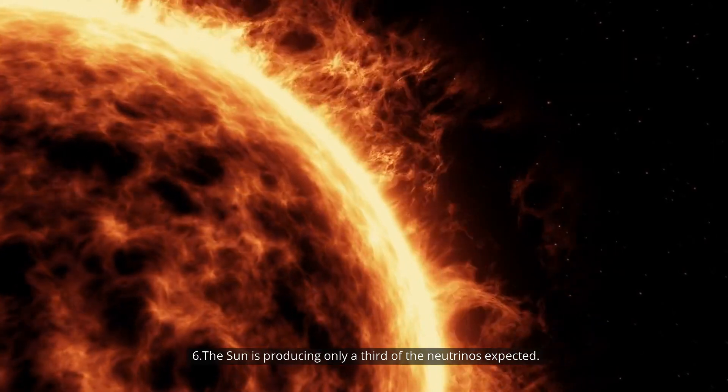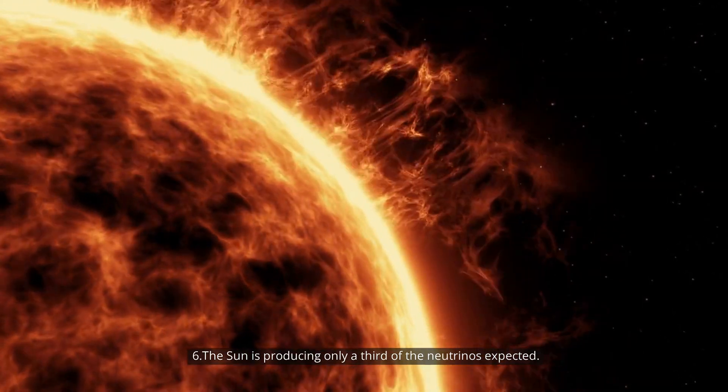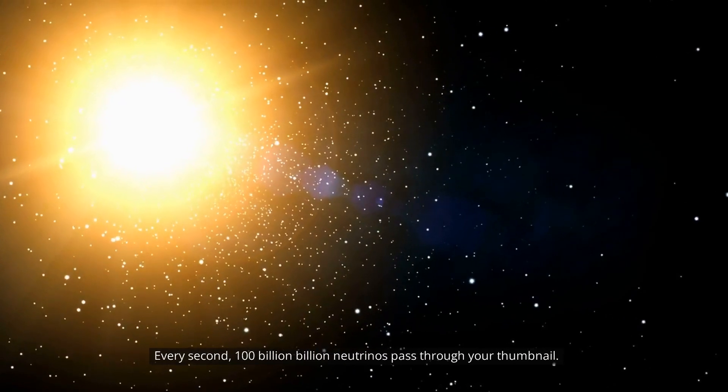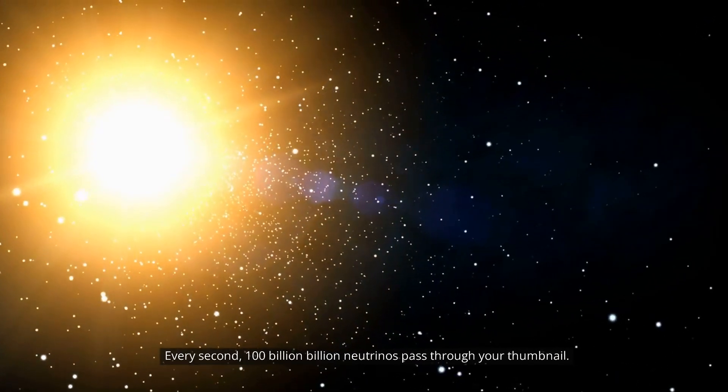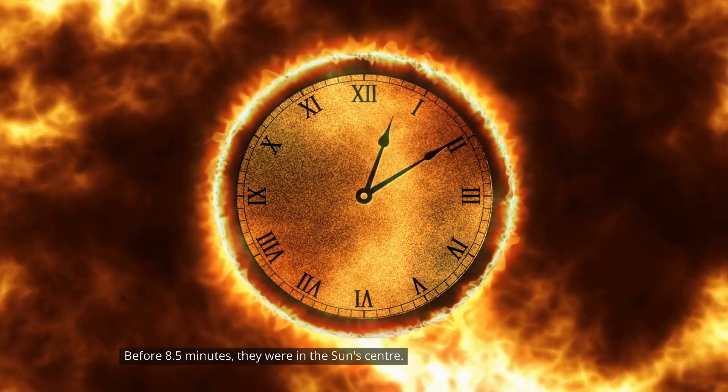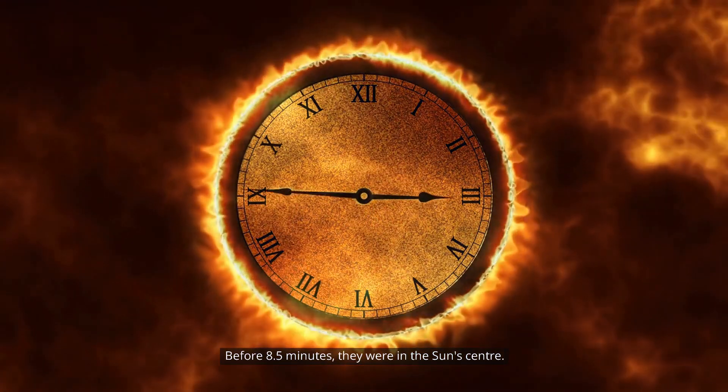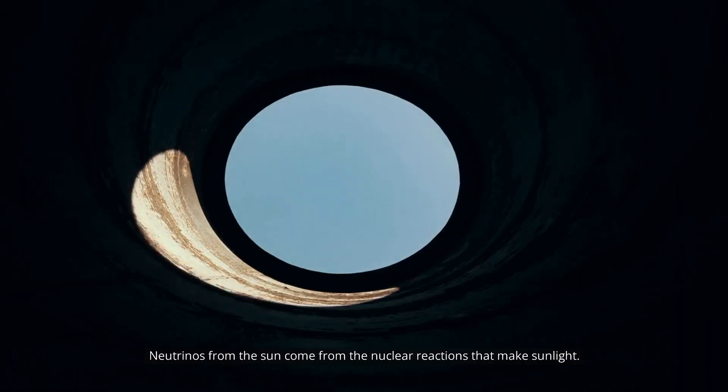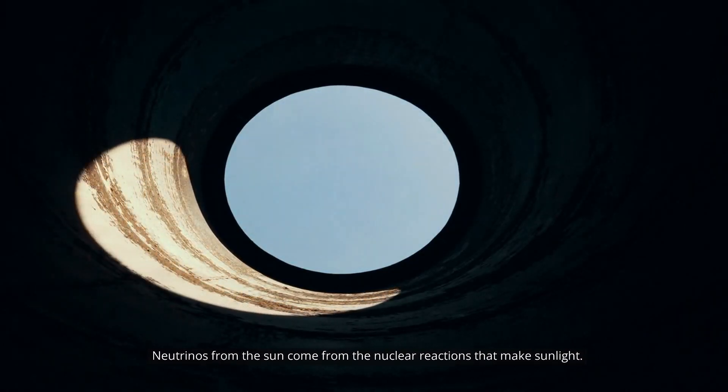Number 6. The Sun is producing only a third of the neutrinos expected. Put your thumb up. Every second, 100 billion billion neutrinos pass through your thumbnail. Before 8.5 minutes, they were in the Sun's center. Neutrinos from the Sun come from the nuclear reactions that make sunlight.